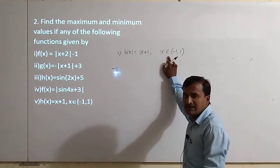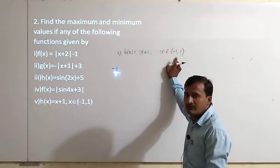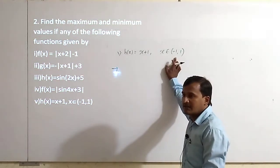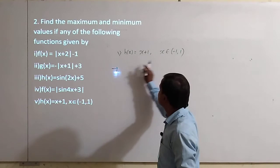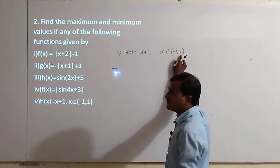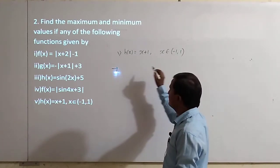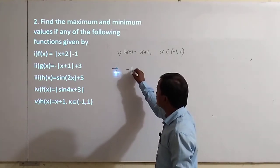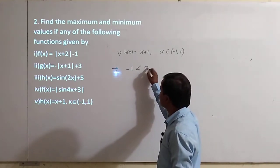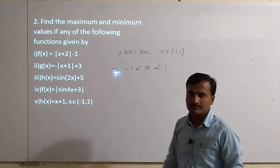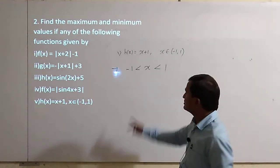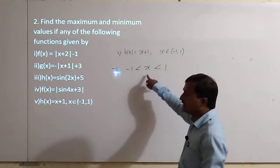x lies between minus 1 and 1, which means it is clearly an open interval. So we will write it as: minus 1 less than x and x less than 1, because it is an open interval.